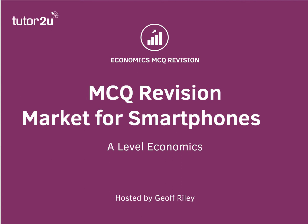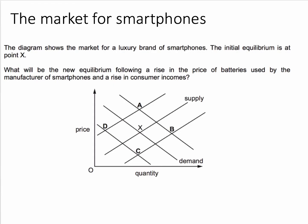Here's a question on market demand and supply of smartphones. The diagram shows the market for a luxury brand of smartphones. The initial equilibrium is at point X. What will be the new equilibrium following an increase in the price of batteries used by the manufacturer and an increase in consumer incomes?